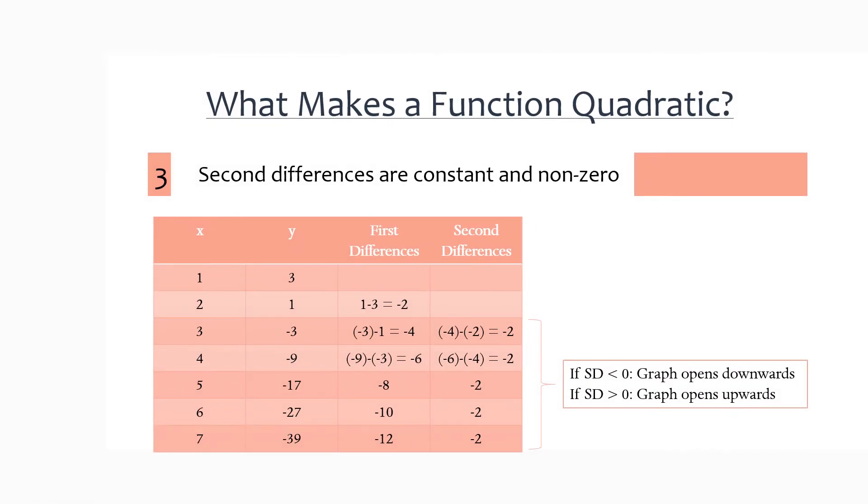The property that makes a quadratic function a quadratic function is this idea of first and second differences. So the second differences are always constant and non-zero, but the first differences in a quadratic function are related by addition. So if you notice, you can add negative 2 and negative 4 to get negative 6. And the same goes on, and it follows this pattern. And all of this together creates a quadratic function.